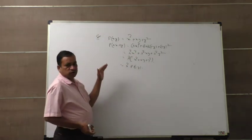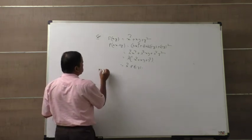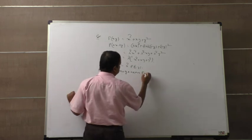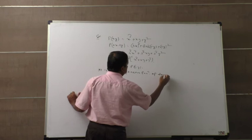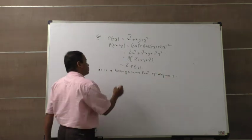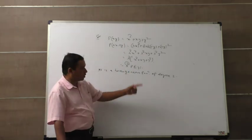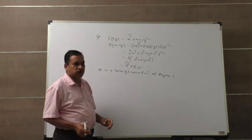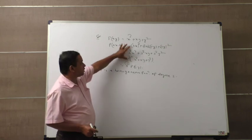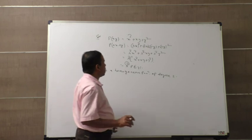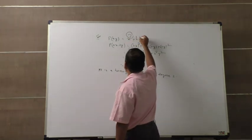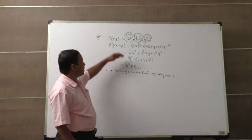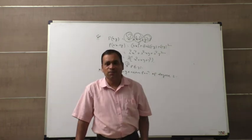Since all the lambda factors come out, according to the definition it is a homogeneous function of degree 2, because the power of lambda is 2. Now, how to identify it is homogeneous by inspection? Here the degree of x² is 2, xy is 2, and y² is 2. So each and every term has the same degree, therefore it is a homogeneous function.